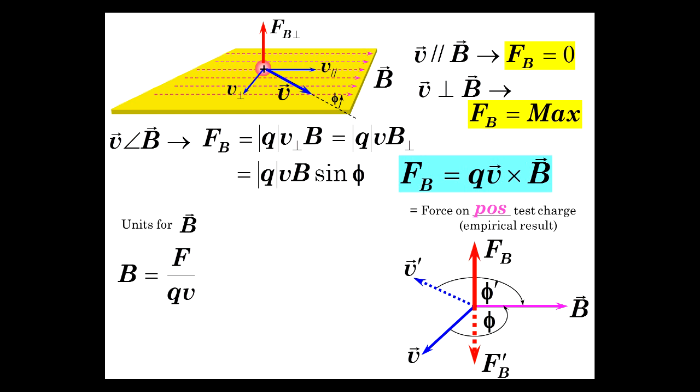Units for magnetic field. Well, look at the equation. B is F over QV. So, force is newtons. Q is coulombs. So, there we go. Newtons over coulombs. V is meters per second. So, meters per second.